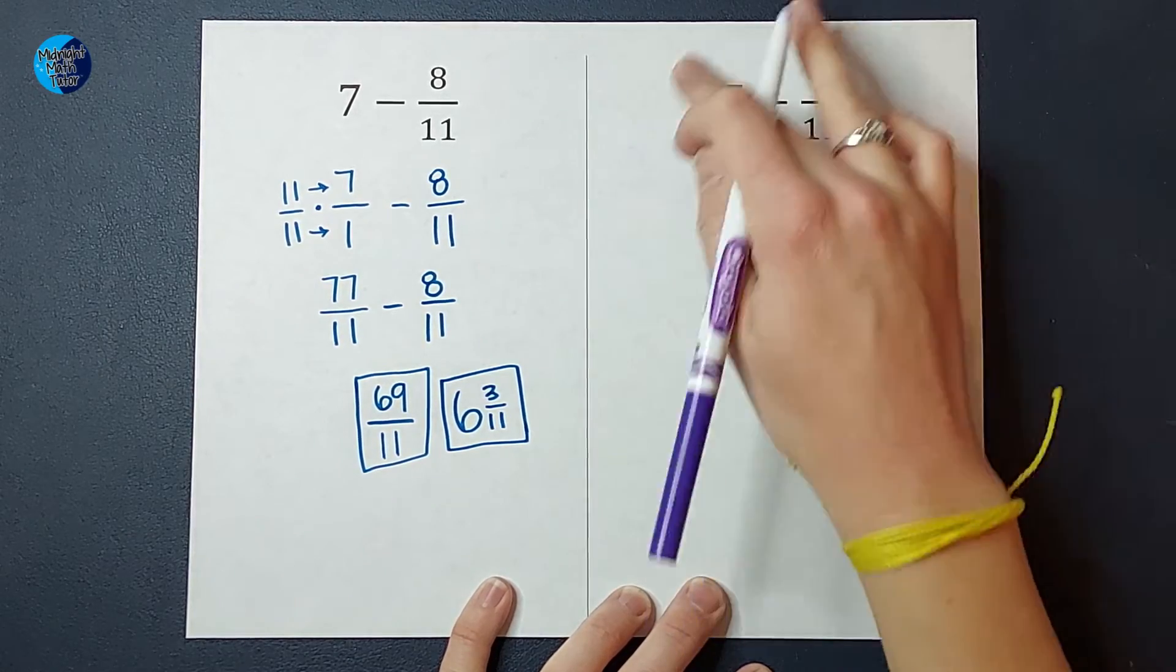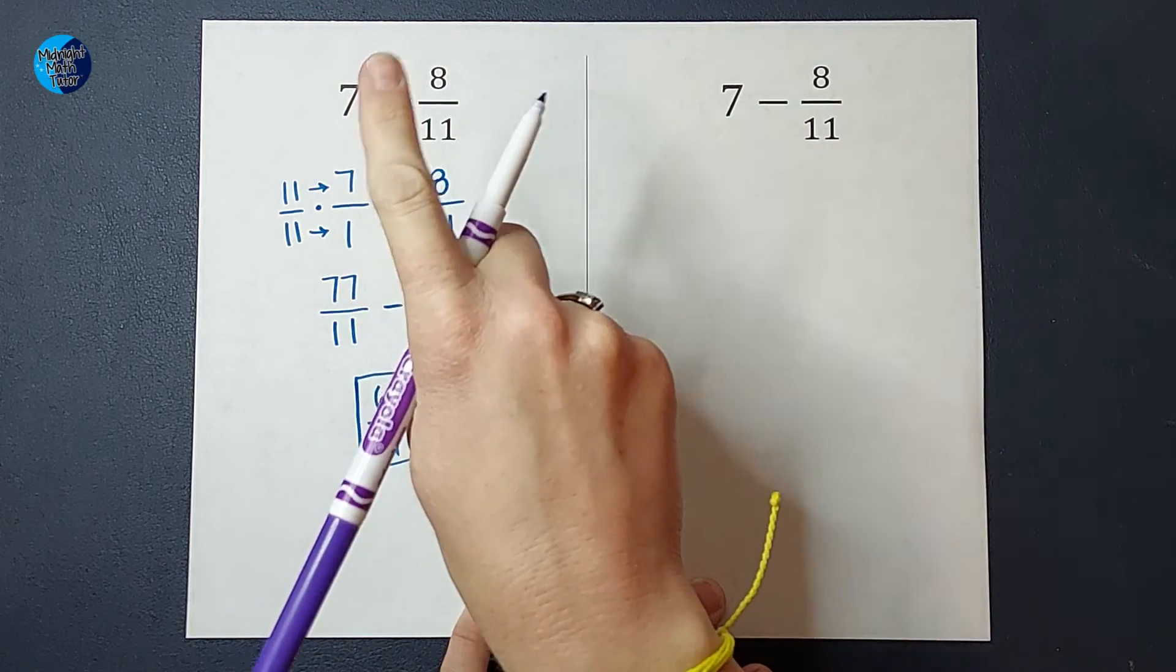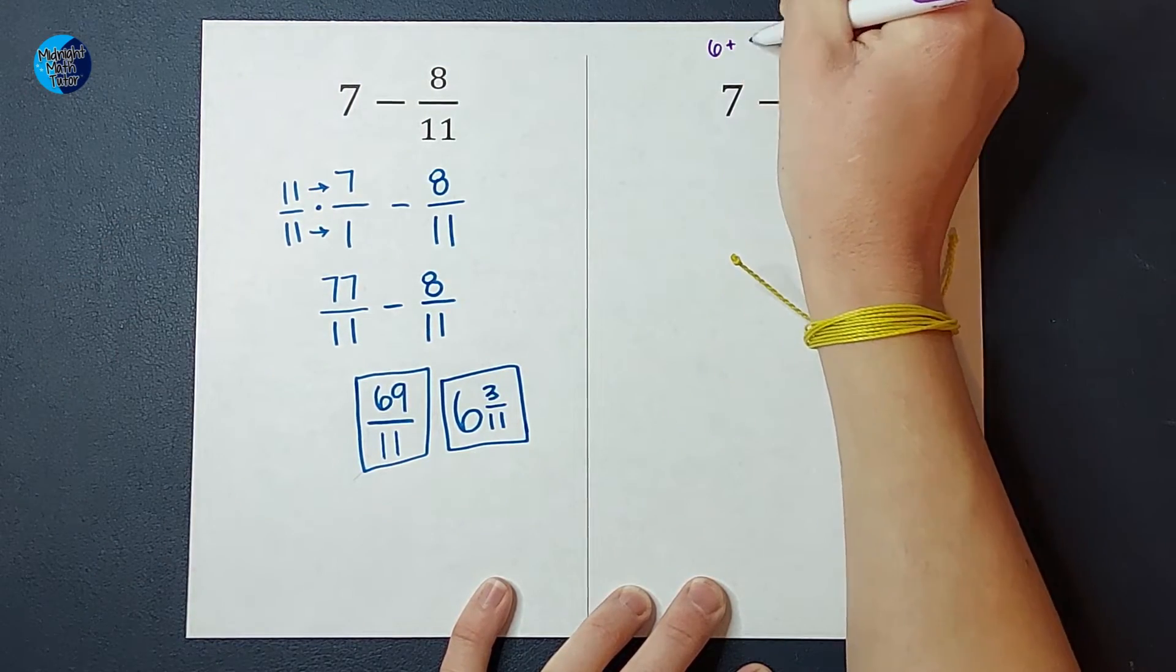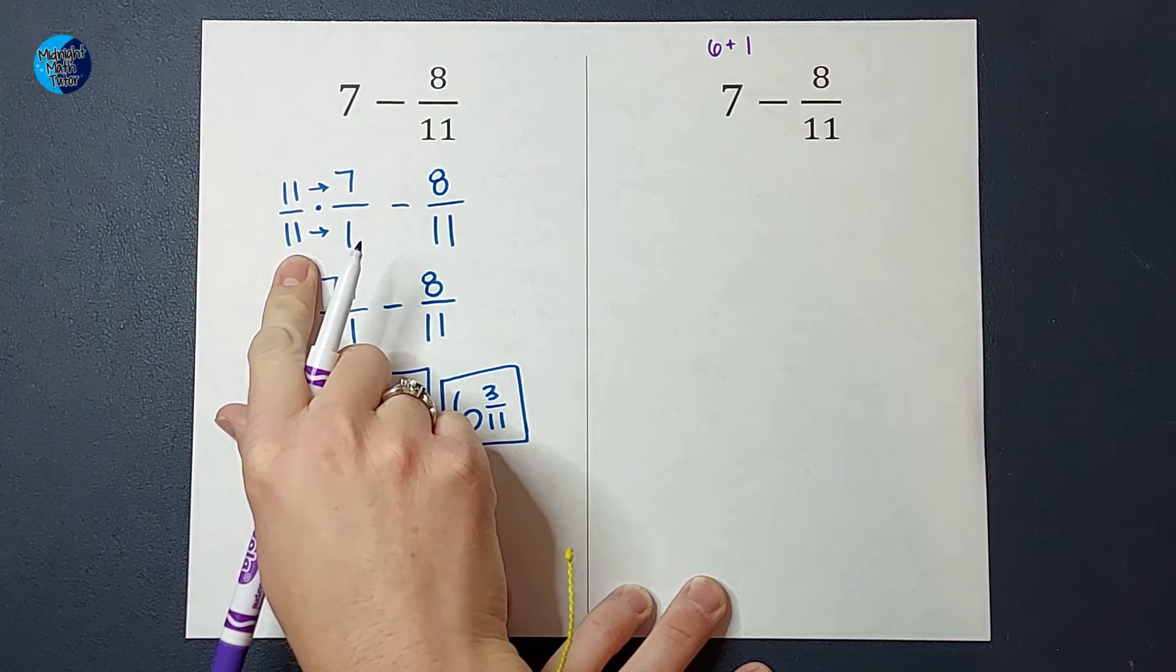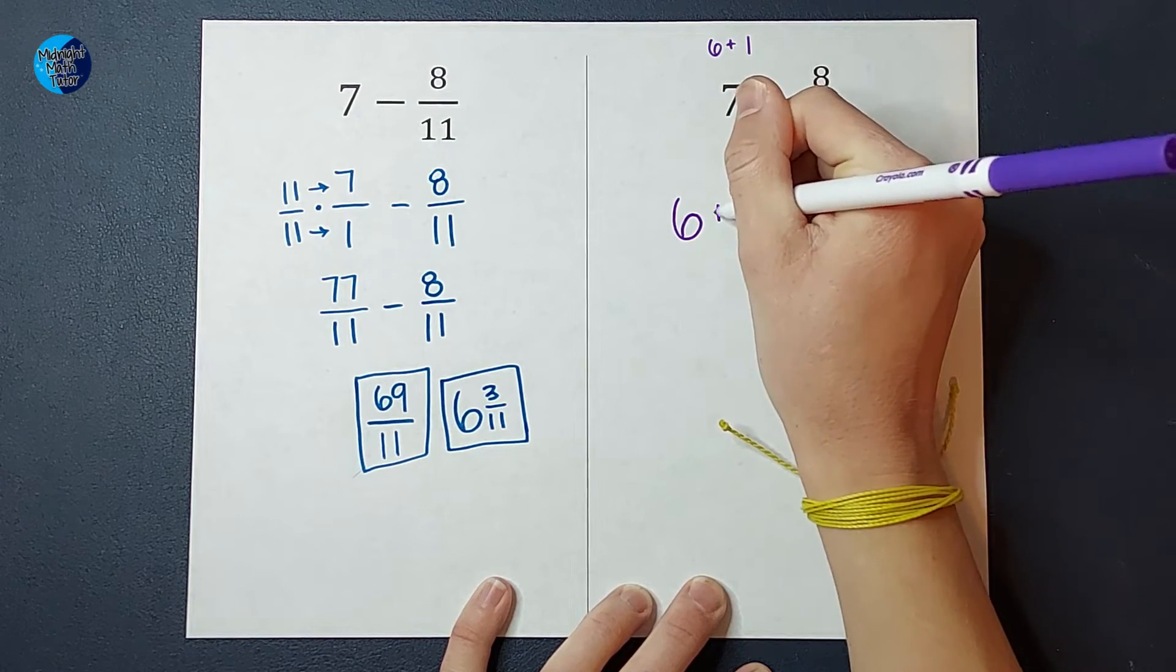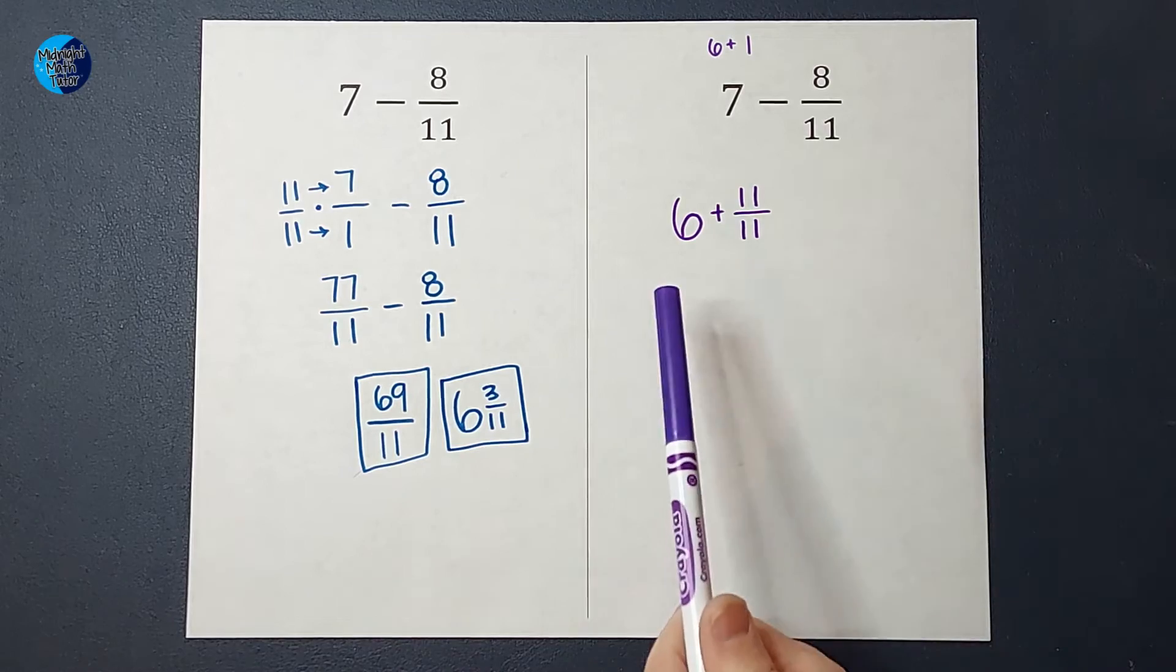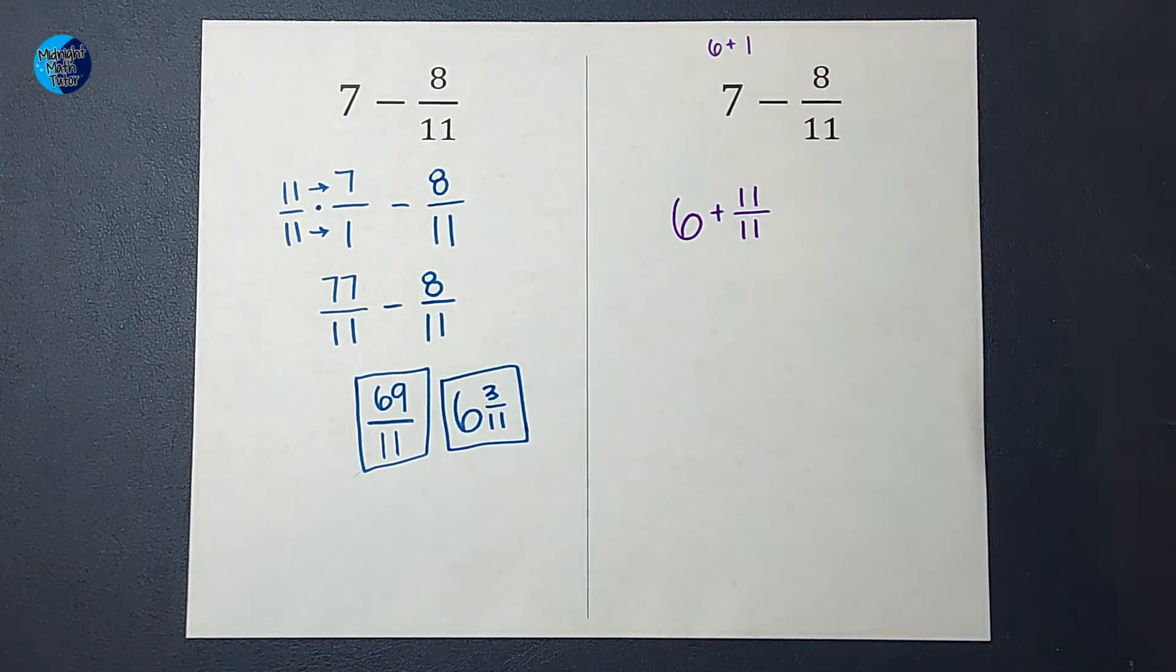I have seven here, but another way I could write seven, stick with me, would be six plus one, right? Six plus one and seven are the same thing. Well, also, what is another way we said we could write one? 11 over 11. So I could write seven as six plus 11 over 11. I know that might be like, that is the weirdest thing I've ever seen. But 11 over 11 simplifies down to one. Six plus one is seven.